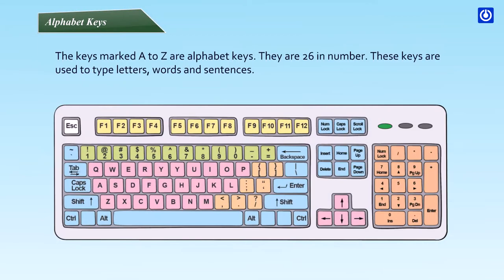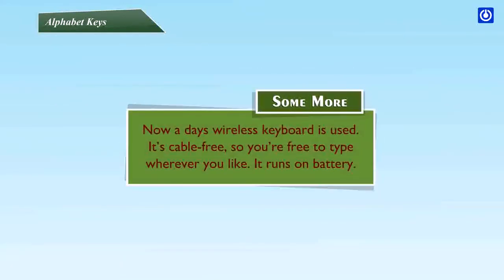Alphabet keys: the keys marked A to Z are alphabet keys. They are 26 in number. These keys are used to type letters, words, and sentences. Nowadays a wireless keyboard is also used — it is cable-free, so you are free to type wherever you like. It runs on batteries.